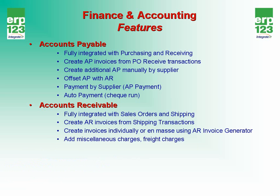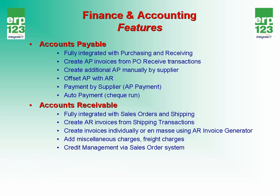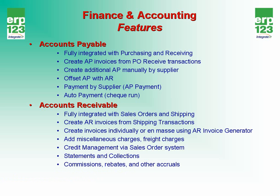You can also add miscellaneous charges and freight charges to your invoice. AR comes with credit management via the sales order system. The sales order system has an approval process as well as a credit management process. The accounts receivable process and AR aging reports provide statements and collection reports. You can also manage commissions, rebates, and other types of accruals.